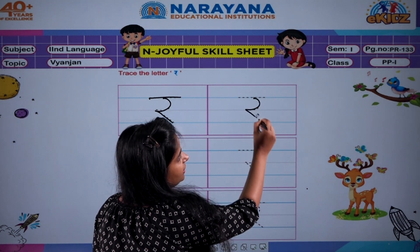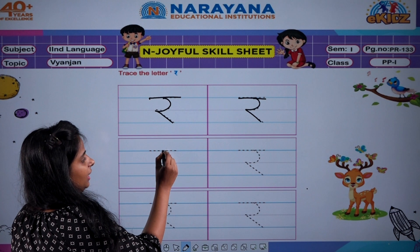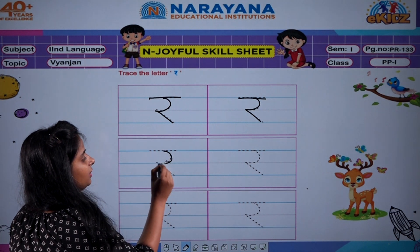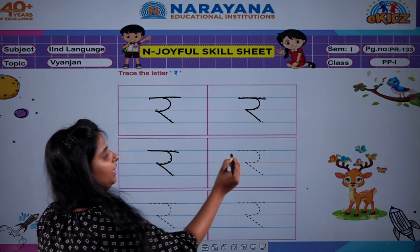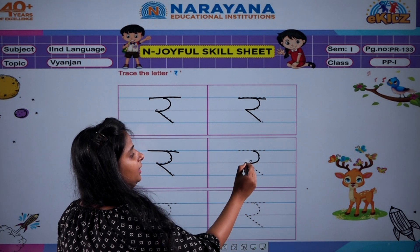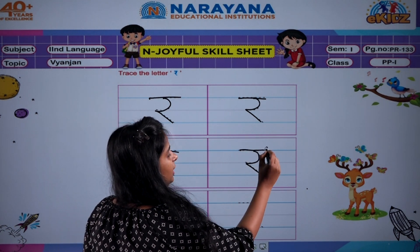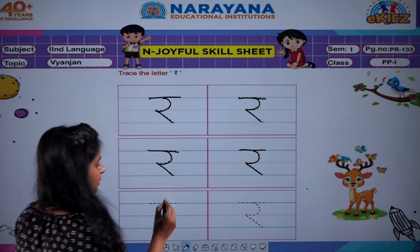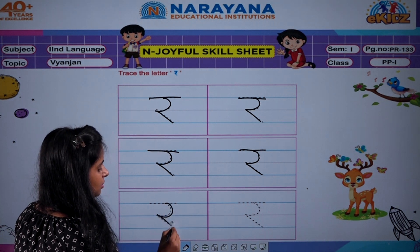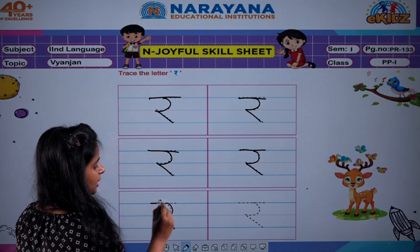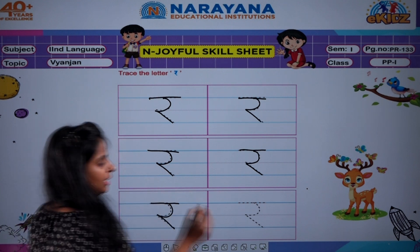R se rasi. R se rat. R se rat. R se rakhi. R se rakhi. Curve and a slanting line. Again a slanting line.